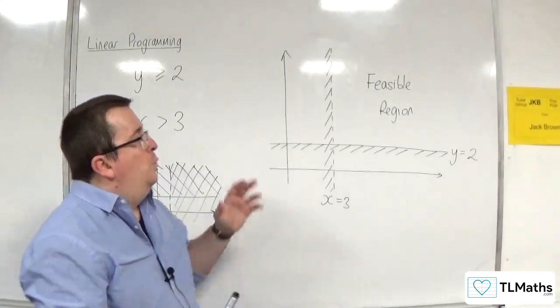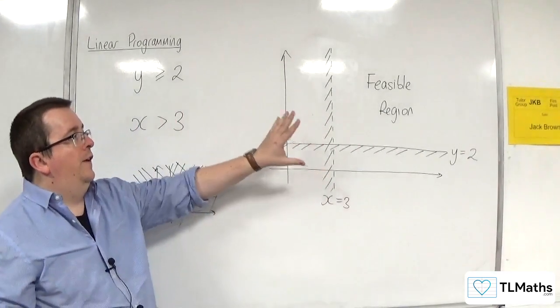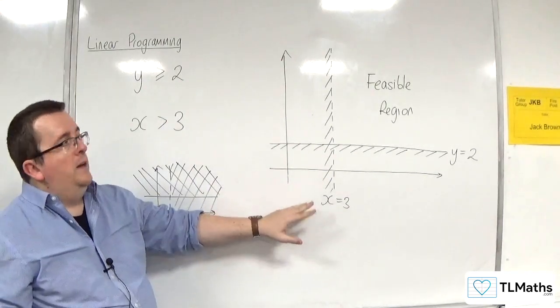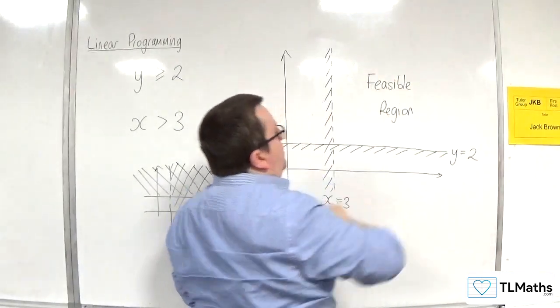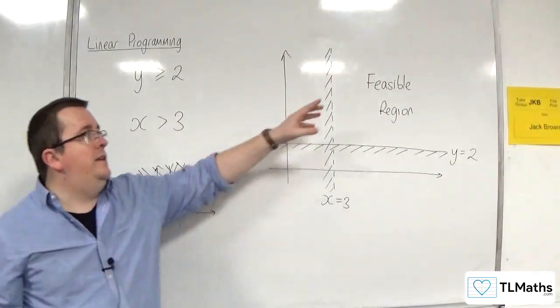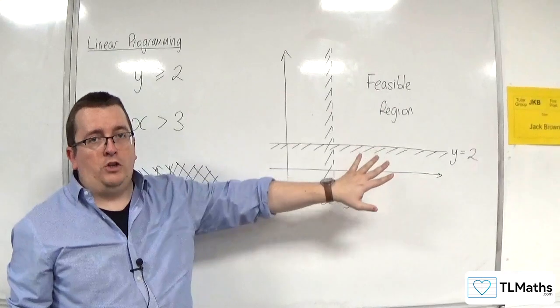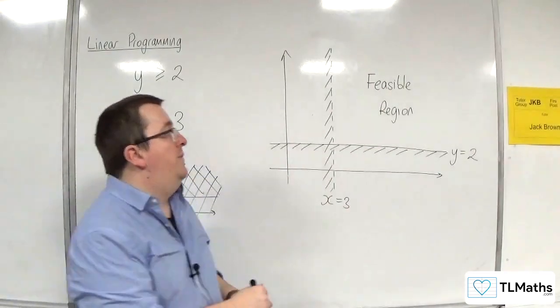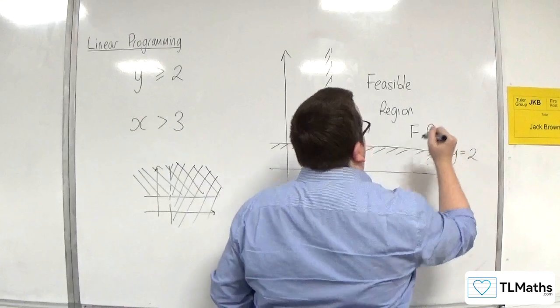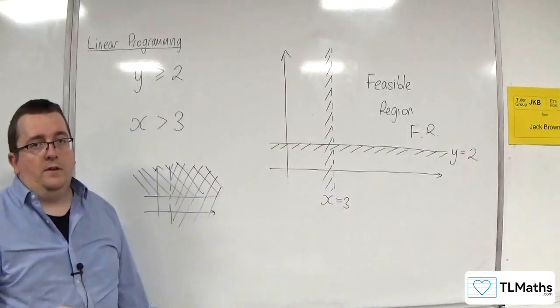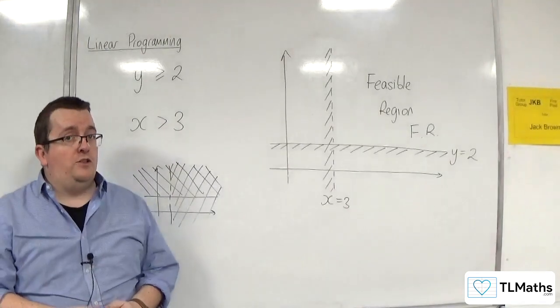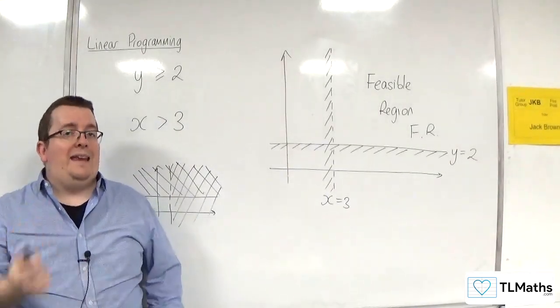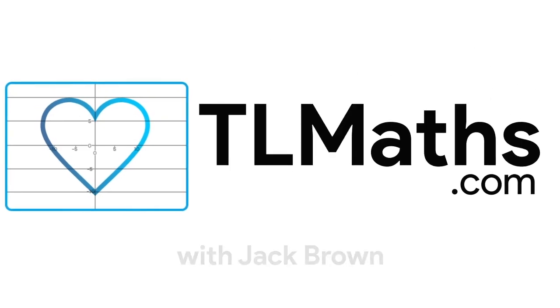But that is how we want to graph our inequalities, and we want to make sure that we clearly identify the feasible region, either by actually stating feasible region, or sometimes it's abbreviated to just FR, or sometimes just even R. But as long as it is clearly identified and you follow the instructions of what they're saying in the exam.